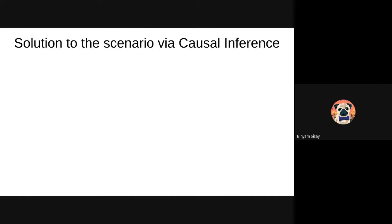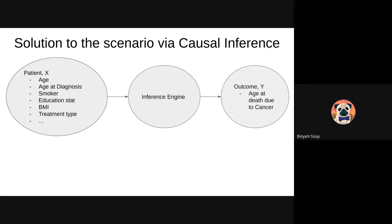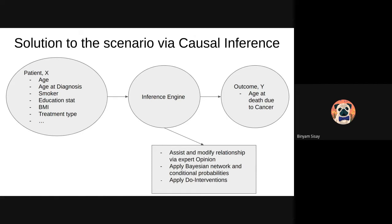With causal inference, the same data goes not to a model but to an inference engine, which predicts the outcome Y. We can also modify the relationships between input variables via expert opinion, and apply Bayesian networks with conditional probabilities to see the joint effects of multiple variables. We can also do interventions — intervening and seeing how the output changes if we do something.